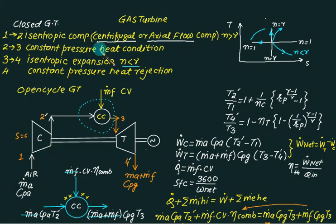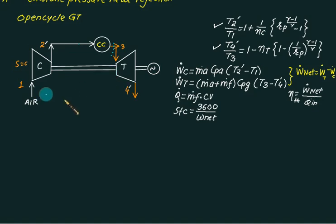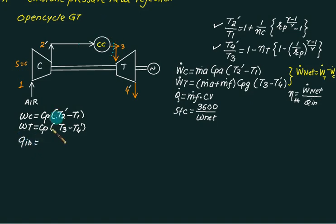Because of this high air flow requirement, a centrifugal or axial flow compressor is used — both are suited for large discharge volumes at relatively low pressure ratios. When no mass flow rate is given, work on a specific basis: W_c equals cp × (T2-dash - T1) and W_t equals cpg × (T3 - T4-dash).